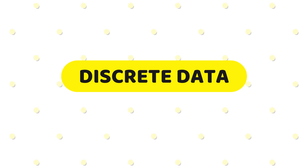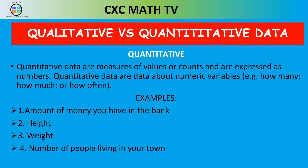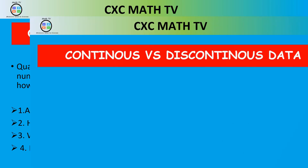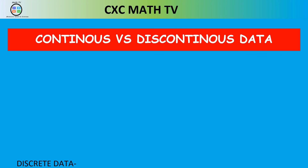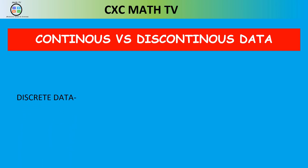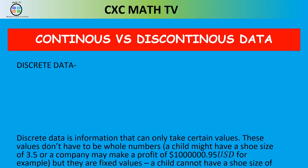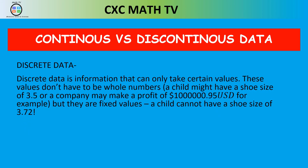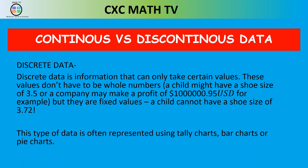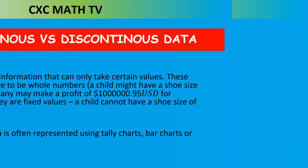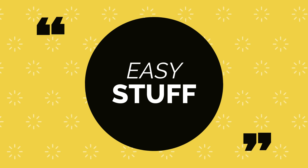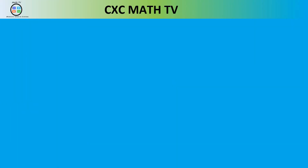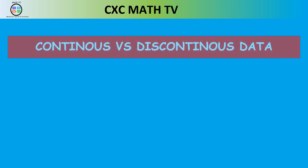Discrete data, or discontinuous data, is information that can only take certain values. For example, a child cannot have a shoe size of 3.72. Shoe sizes go: seven, seven and a half, eight — you never hear 3.62 or 3.99. So these are not continuous; they are discrete data. This type of data is usually depicted by tallies, bar charts, or pie charts.